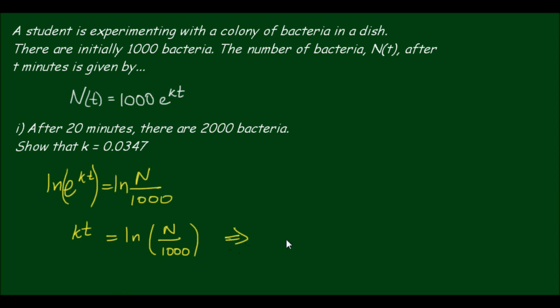And then to get k on its own, we divide both sides by t. So k is equal to 1 over t times ln of n divided by 1000. Alright, so we know that t is equal to 20 minutes. So to find k, we simply plug into our calculator 1 over 20 times the natural log of n is 2000. So 2000 divided by 1000 gives us 2. And plugging this into a calculator does indeed give us 0.0347 to 4 decimal places.